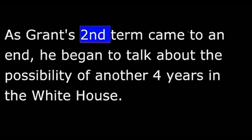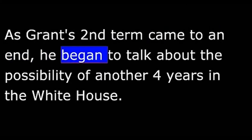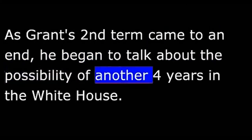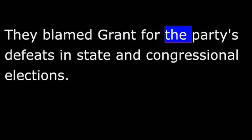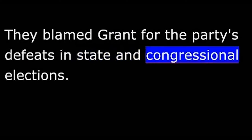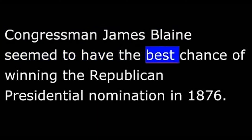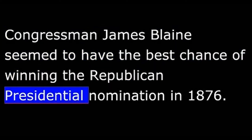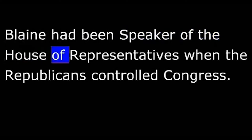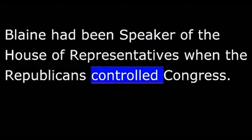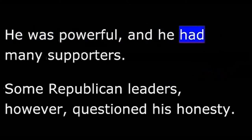As Grant's second term came to an end, he began to talk about the possibility of another four years in the White House. Republican politicians were firmly opposed. They blamed Grant for the party's defeats in state and congressional elections. Grant had to give up any hope of a third term. Congressman James Blaine seemed to have the best chance of winning the Republican presidential nomination in 1876. Blaine had been Speaker of the House of Representatives when the Republicans controlled Congress. He was powerful, and he had many supporters.